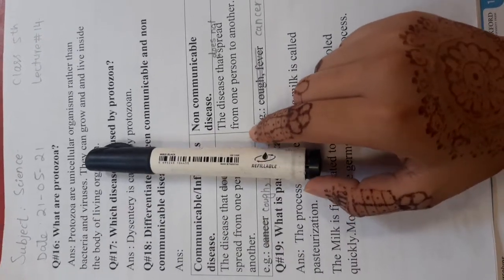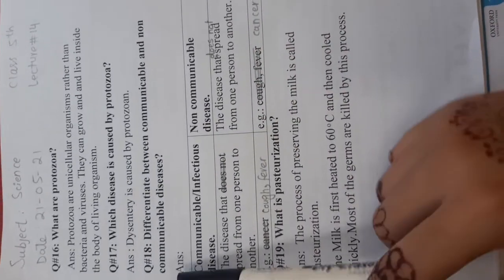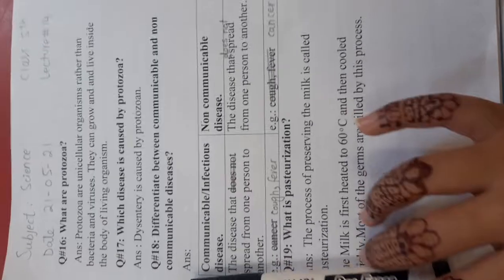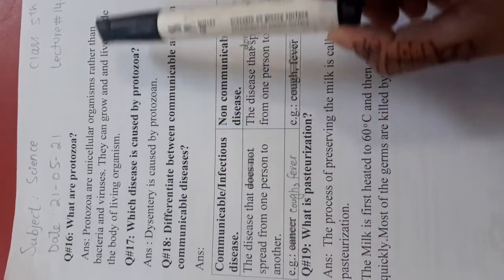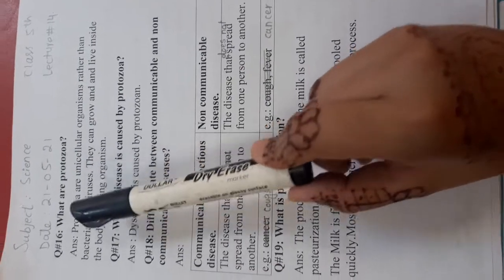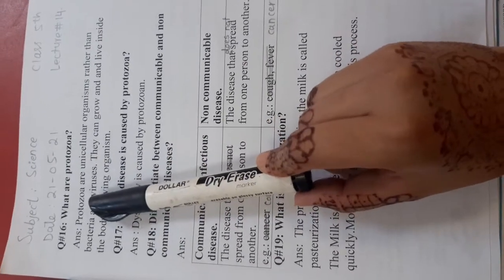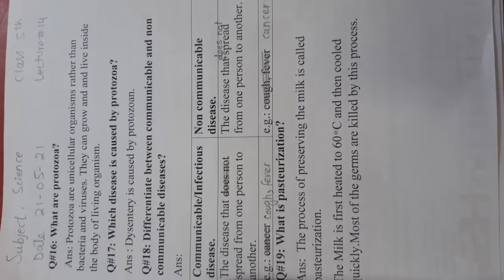Protozoa are microorganisms and these are unicellular organisms. Some can be seen with the naked eye, but most of these are microorganisms. Unlike bacteria and viruses, these are unicellular organisms. The fungi we have seen are unicellular and multicellular, whereas protozoa are unicellular.